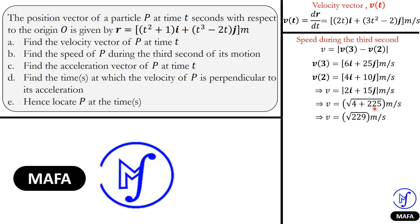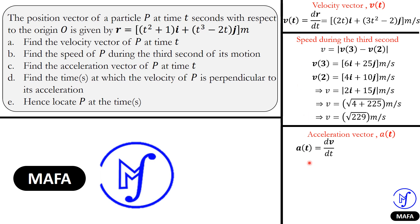Part c asks for the acceleration vector. To find it, we take the second derivative of the position vector, or equivalently the first derivative of the velocity vector — dv/dt. Differentiating 2t gives 2 for the i component; differentiating 3t² − 2 gives 6t for the j component. So the acceleration vector is 2i + 6t j meters per second squared.